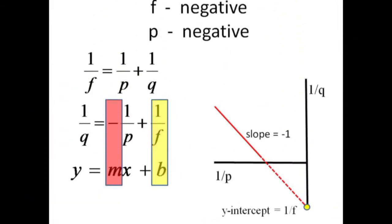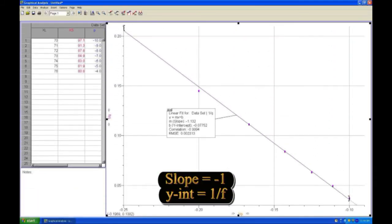Construct a graph of 1 over q versus 1 over p for the diverging lens and expect a slope of negative 1 and a negative y intercept with an inverse equal to the negative focal length of the diverging lens. Here is a graph of our data for the negative lens.